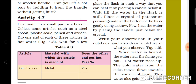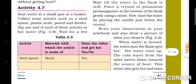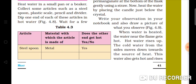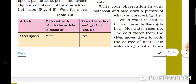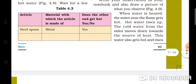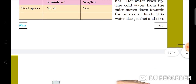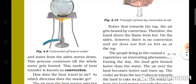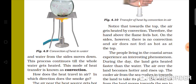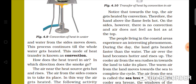Stir the potassium permanganate into the water. Now heat the water by placing the candle just below the crystal. Write your observations in your notebook. Draw a picture showing how heat moves in the water. Observe: cold water rises up, and what is cold water doing? It moves downward. Under the source of heat, this water also gets hot and the heat rises.